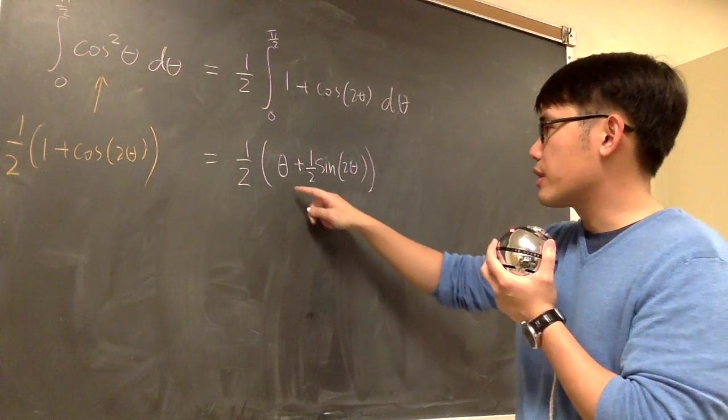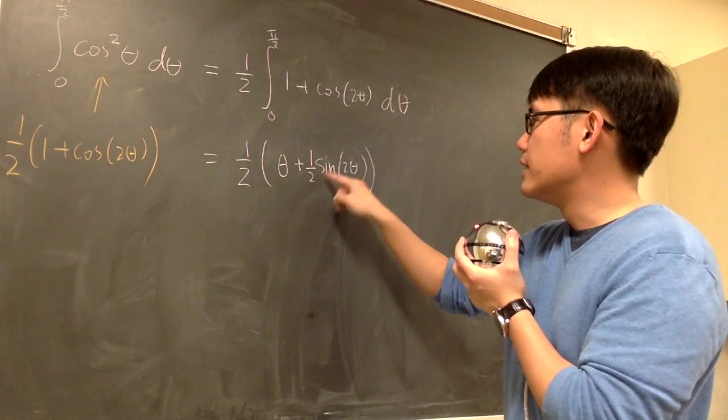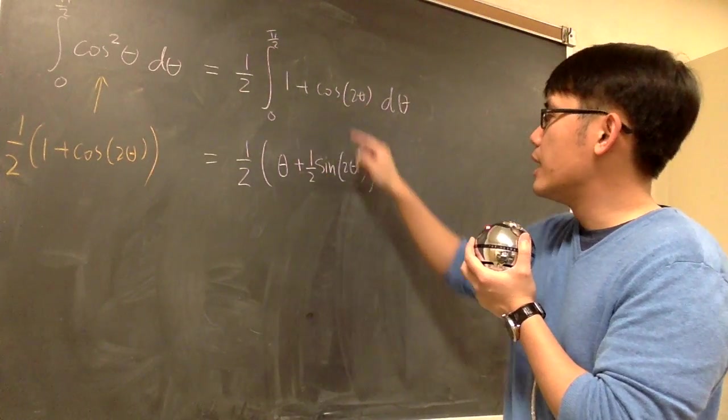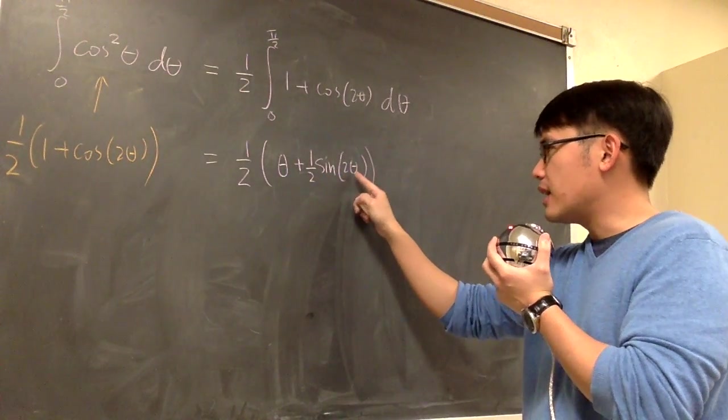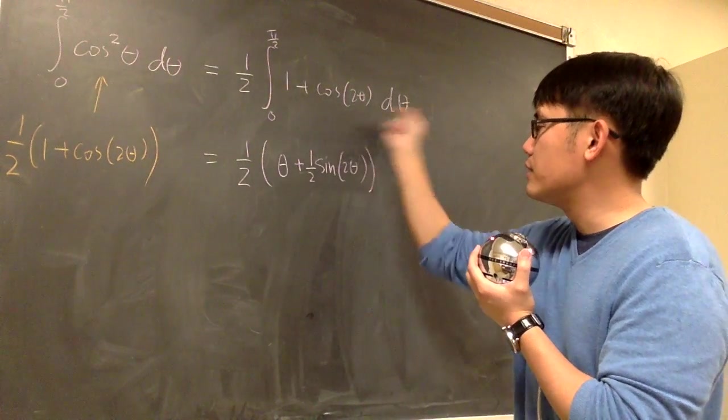Let's just verify this real quick. Derivative of theta is 1. Good. Derivative of 1 half sine 2 theta. Sine becomes cosine. But then the 2 theta, you have to multiply by the 2. So the 2 will cancel out with the 1 half.